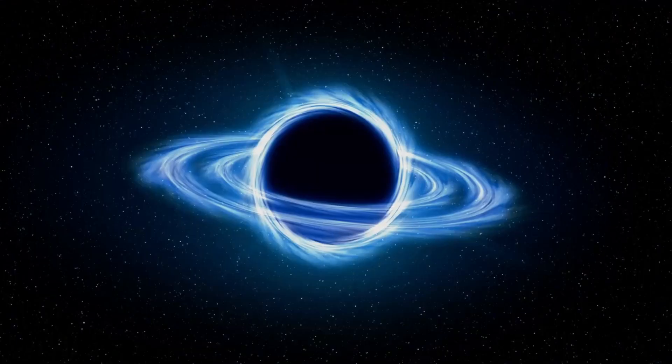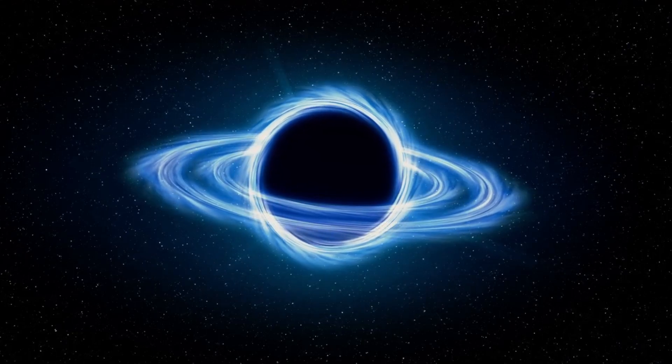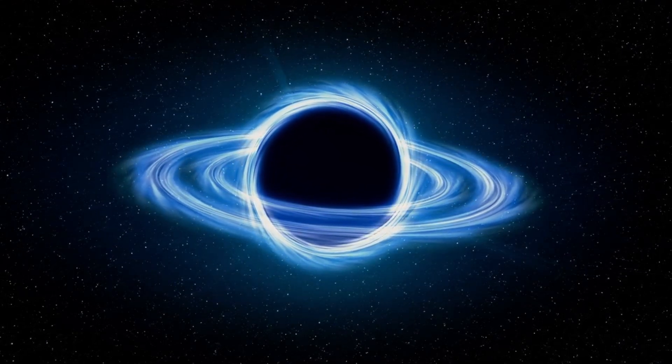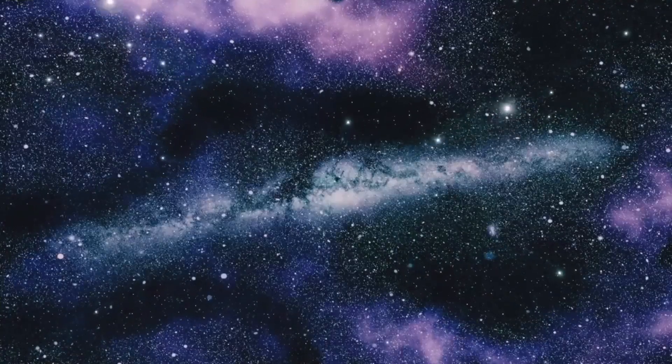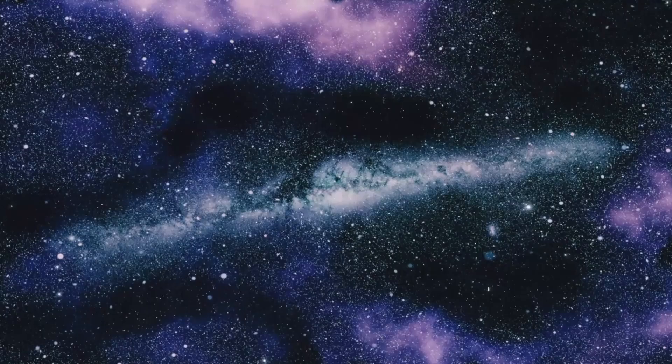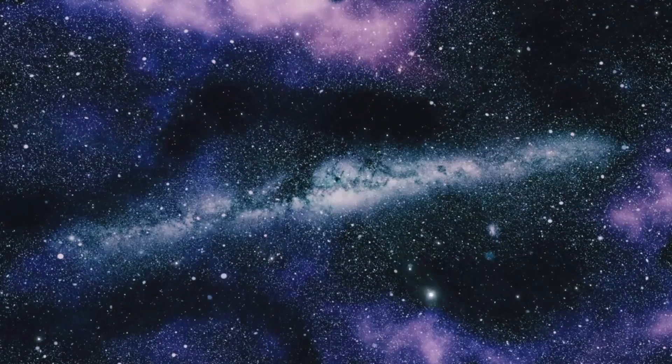Smaller stars, when they die, change into neutron stars, which are very dense but not dense enough to trap light. However, if a star is multiple times the mass of our sun, it falls under its own gravitational pull, forming a black hole.